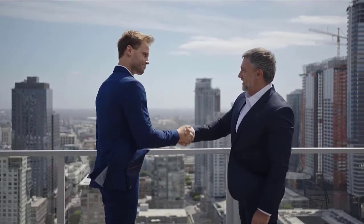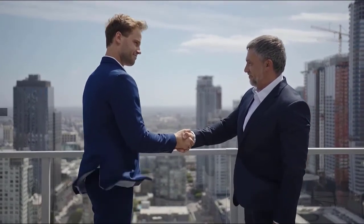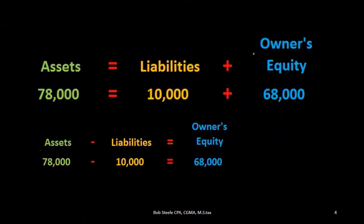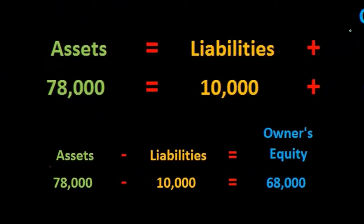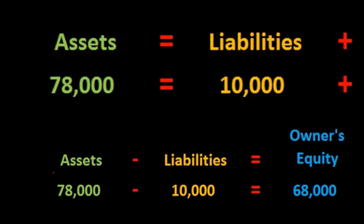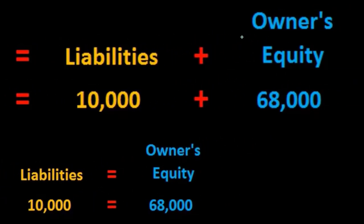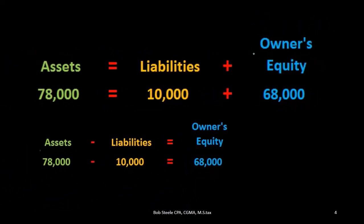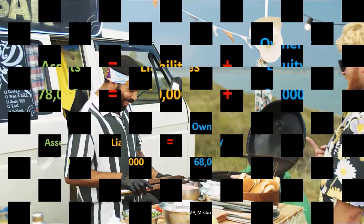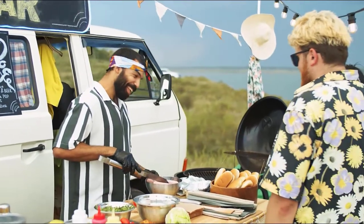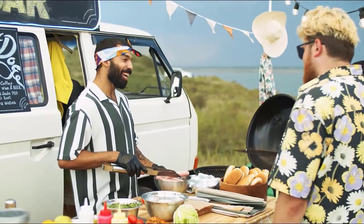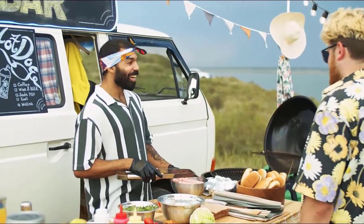The equity section as a whole will remain much the same in that it represents the book value — the value of the company on a book basis owed to the owners, whoever those owners may be: whether an individual owner, sole proprietor, partners in a partnership, or shareholders in a corporation.